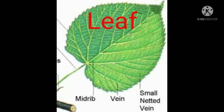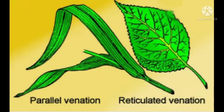Leaves are deep green in color because there is a pigment called chlorophyll present in them. You may have seen a network of lines on a leaf — these lines are called veins, and the pattern of veins on the leaf is called leaf venation.